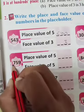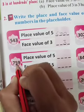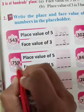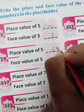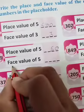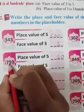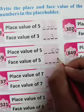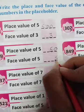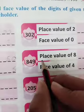Five is in the tens place — it means fifty. So here you will write 50. And the face value of 5 — students, the face value of a digit is always the same as the digit, so the face value of 5 is 5.